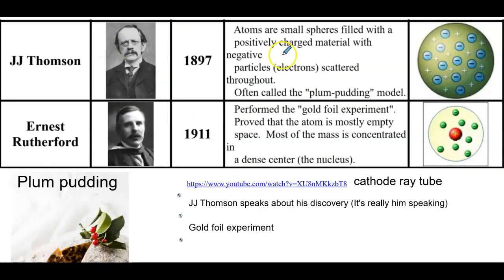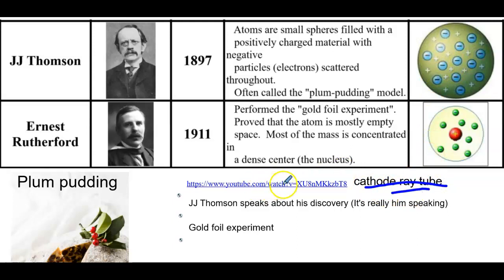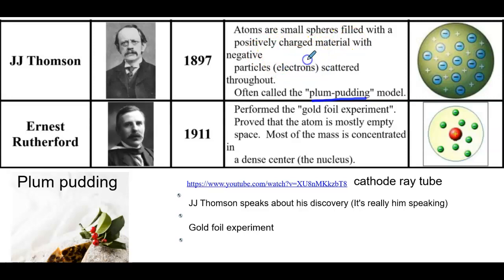Then we have JJ Thompson. He comes up with the plum pudding model, which basically said that there are electrons within a big giant positive material. He used something called the cathode ray tube experiment. You really don't have to watch a video about the cathode ray tube — you just need to know he is the one who came up with the plum pudding model. And the key point is that he discovered electrons.